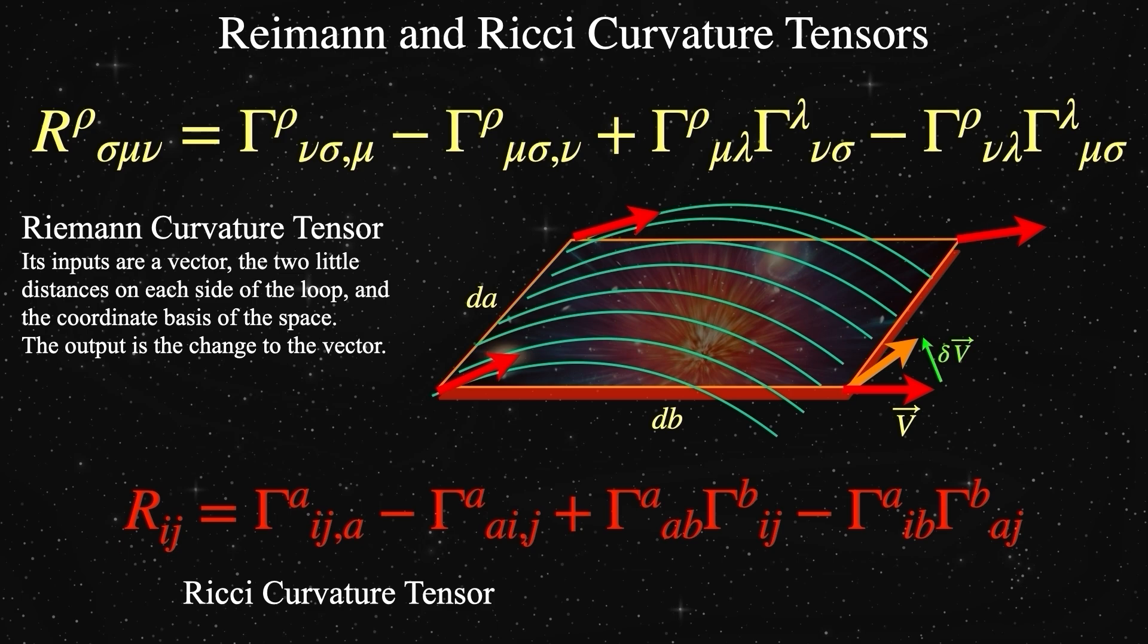In this diagram, the starting vector is yellow V, with an arrow over it down in the lower right. That's the red arrow pointing straight to the right above it. We then parallel transport yellow V counterclockwise around the loop back to its original location. This loop finishes with the orange arrow. The orange arrow differs from the original red arrow by some delta V, which is seen in the little green arrow. The Riemann curvature tensor is the object that tells us how much and in what direction little green delta V is pointed.